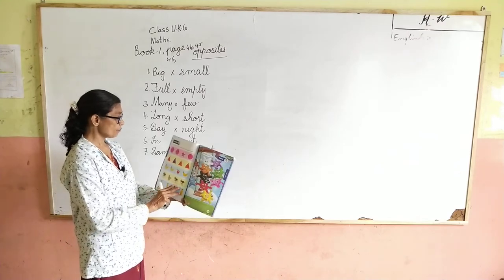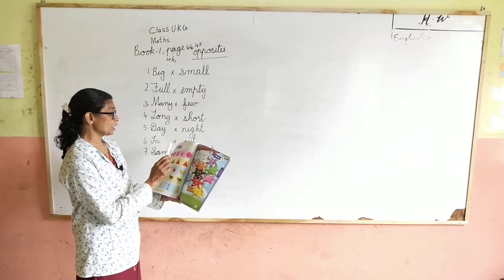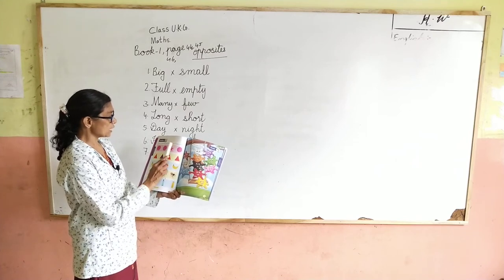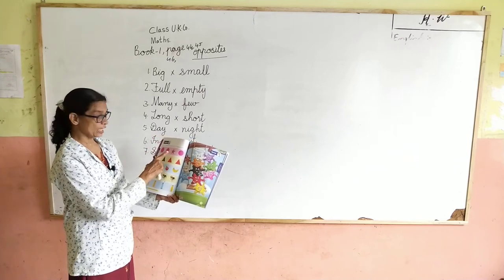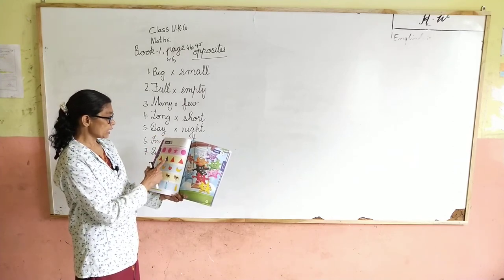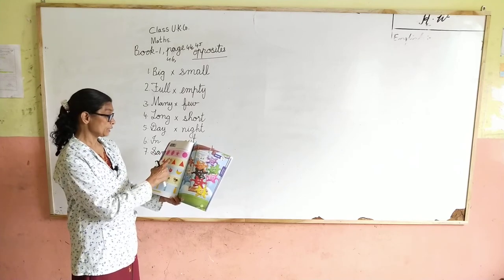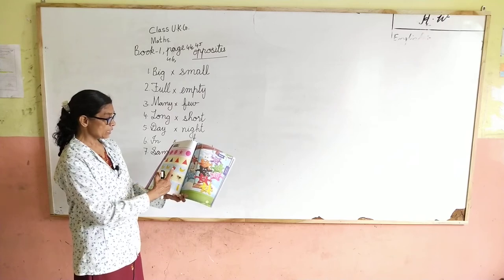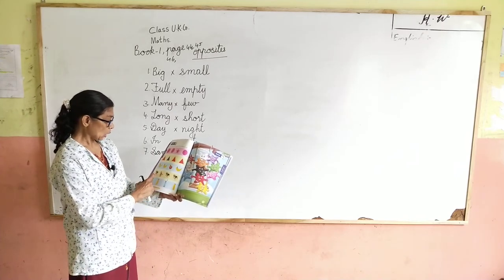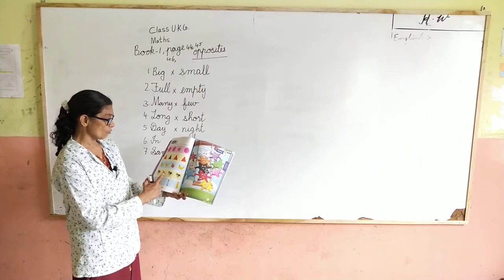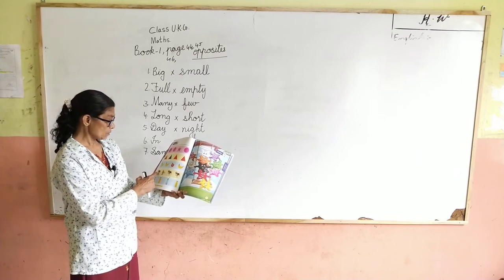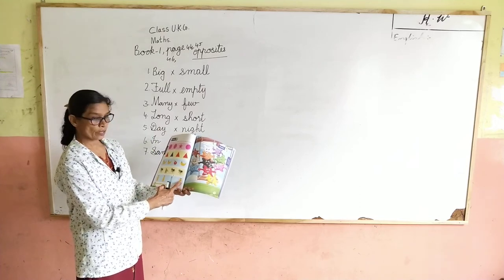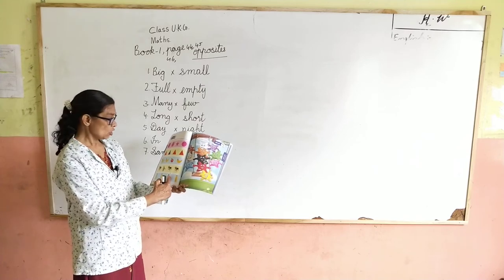On page 48, we have to tick the one that is different. We have three circles and one star — tick the star. We have three triangles; the blue triangle is different — tick the blue triangle. For fruits: banana and apple — tick the different one. Next, three dogs and one cat — tick the cat, as the three dogs are the same. For drinks: three yellow juice bottles and one blue water bottle — tick the blue water bottle. Do you understand? Page number 48.